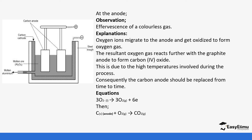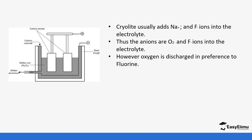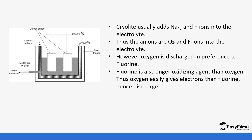At the anode, oxide ions are discharged to give oxygen gas. At the cathode, aluminium ions gain electrons to form solid aluminium. Cryolite adds sodium ions and fluoride ions into the electrolyte. The anions present are oxide ions and fluoride ions; however, oxygen is preferred over fluorine because fluorine is a very strong oxidising agent with a higher tendency to lose electrons. At the cathode, aluminium is discharged instead of sodium.